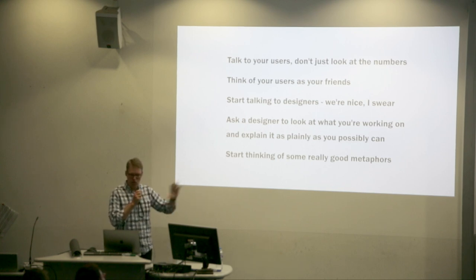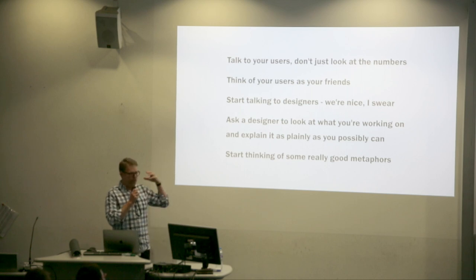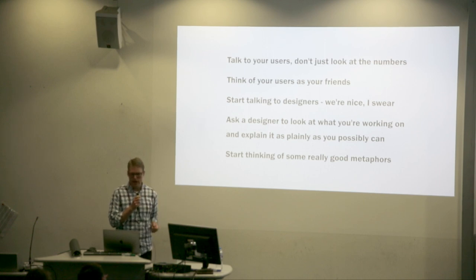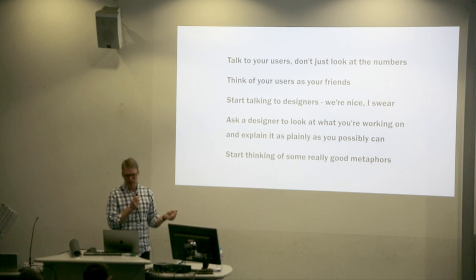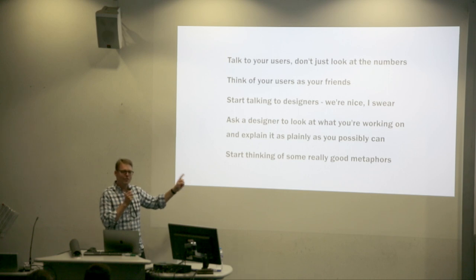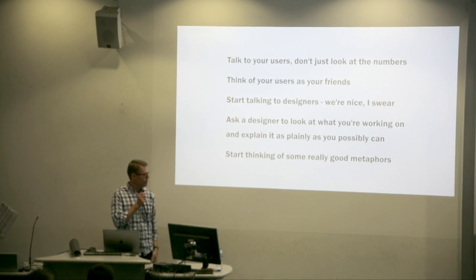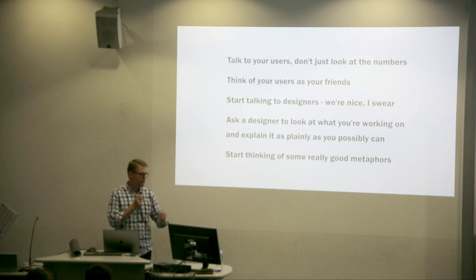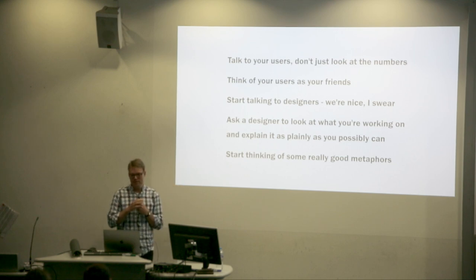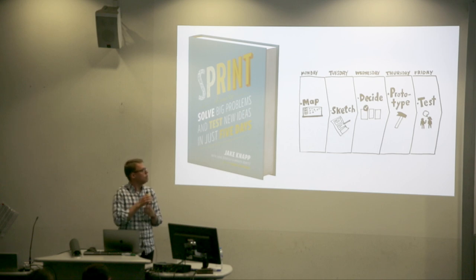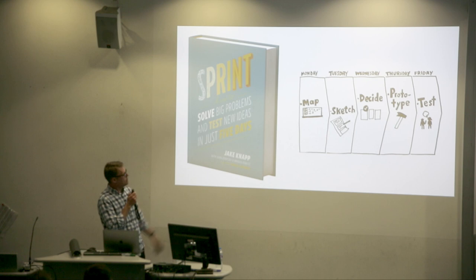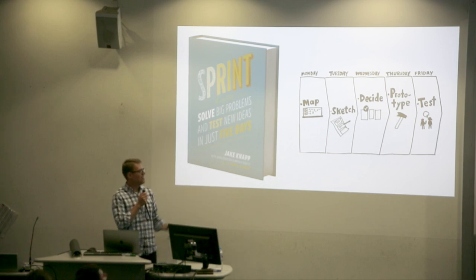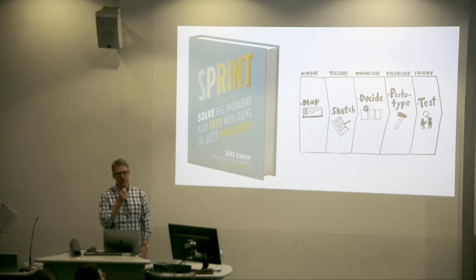Make something for your friends. Start talking to designers — I'll be at the pub later. Ask designers and try to explain in plain English what you're doing and get feedback. Think about really good metaphors too, because that's the really hard one. I tried to explain blockchain to my wife — I said it's like a big Google Doc, nobody's in charge of it but everybody owns it — and that sort of made sense. Also, a design sprint is a fantastic tool — Jake Knapp from Google Ventures wrote a book on it. It's a rigorous five-day process from idea to tested prototype.